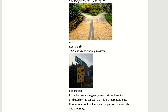In the two examples given, 'crossroads' and 'dead end' are based on the concept that life is a journey. This must thus be inferred — it is not a clear metaphor but an inferred kind of metaphor implying a comparison between life and a journey. This type of implied metaphor is much more difficult.